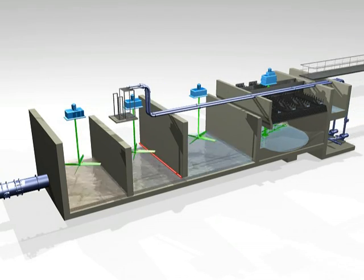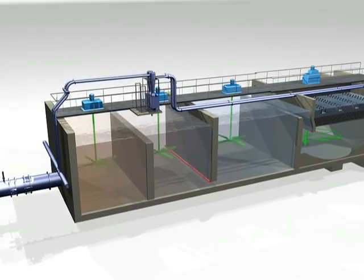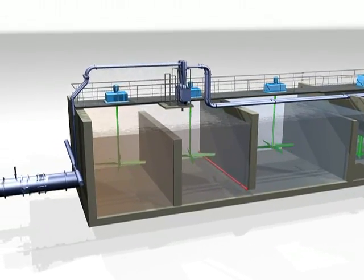Centrifugal, rubber-lined pumps are used to pump the microsand sludge slurry to hydrocyclones for sand cleaning and recovery.